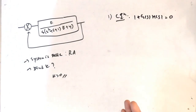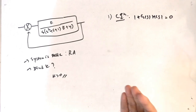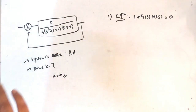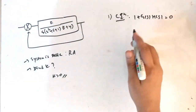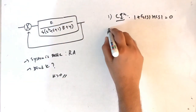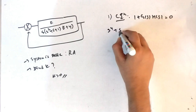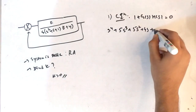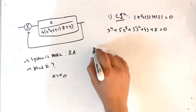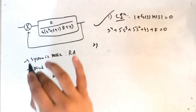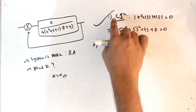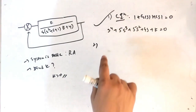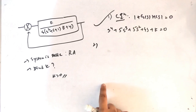G(s)·H(s) is given in the question, but indirectly — this is G(s) and this is H(s). Plug in those values and rearrange; you will get s⁴ + 5s³ + 5s² + 4s + k = 0. Once you have the characteristic equation, you can apply the Routh array logic to find the value of k.